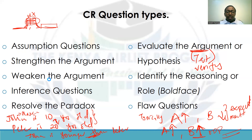Then we have identify-the-reasoning or role questions — these are bold-faced questions. You have a passage with a section bolded and you're supposed to identify its role: is it a main conclusion, a premise, or what is it doing in the stimulus? Then you have flaw questions, where you have an argument that is flawed and you're supposed to pick an answer that clearly defines what flaw that argument has.